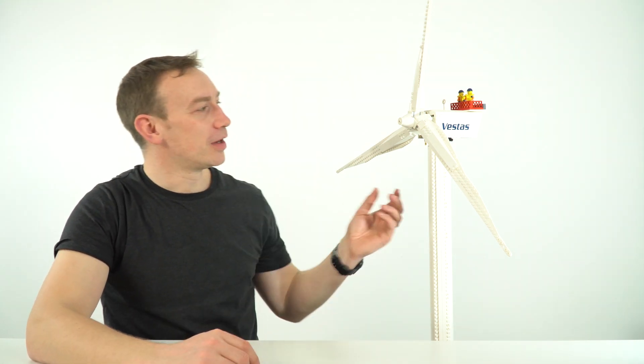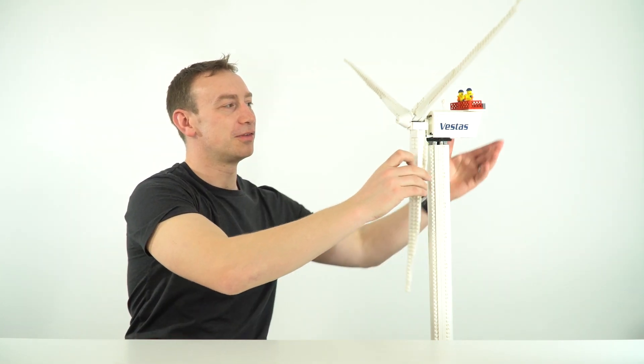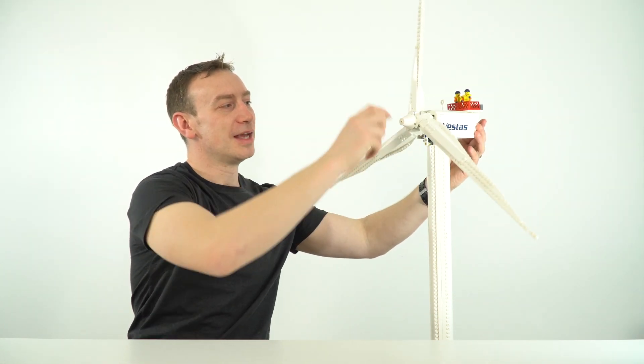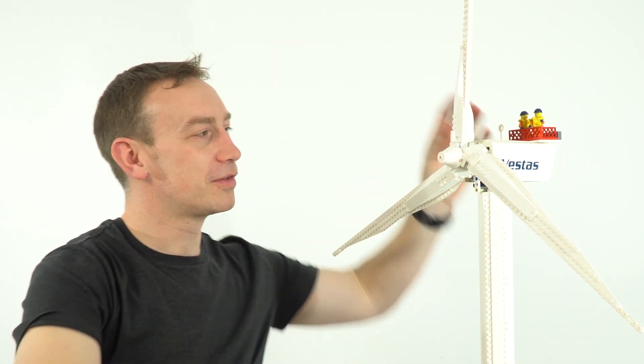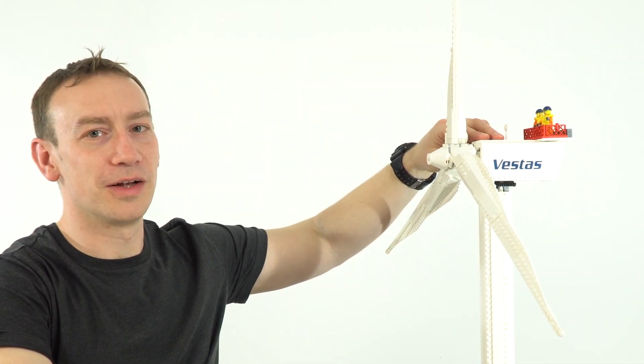This is a wind turbine and it's a renewable way of generating electricity. The way it works is that when it's windy, the wind hits these long blades and causes this part here to spin. This is connected up through a gearbox to a generator in the top part of the wind turbine itself.